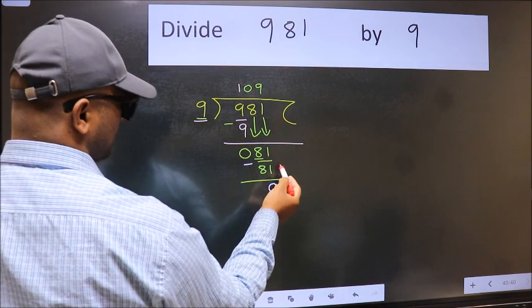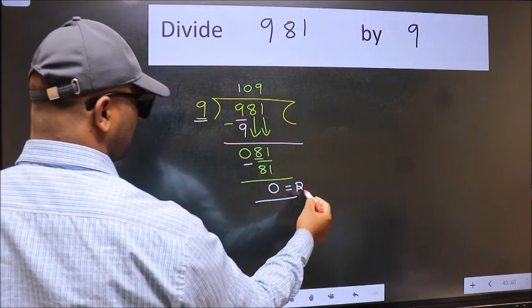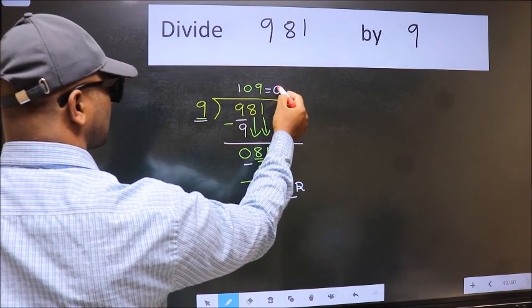No more numbers to bring it down. So we stop here. This is our remainder and this is our quotient.